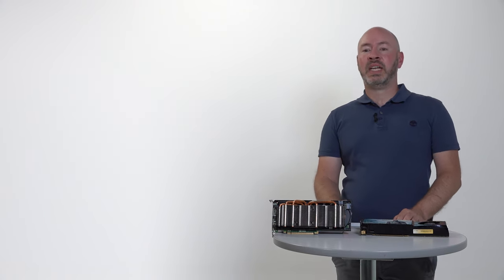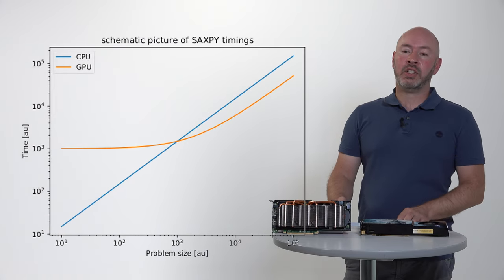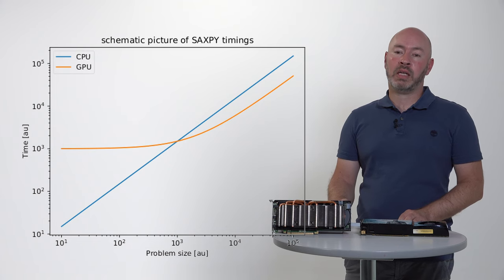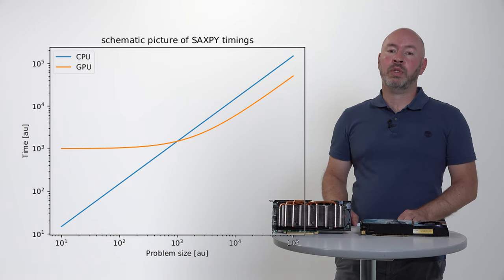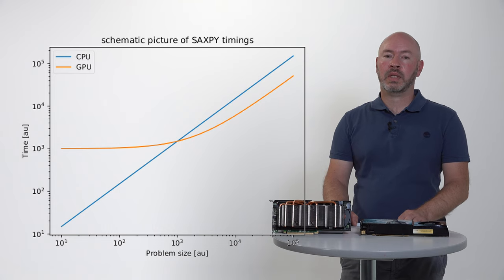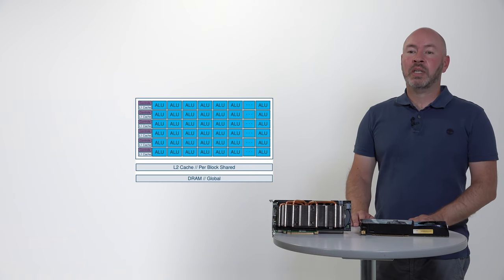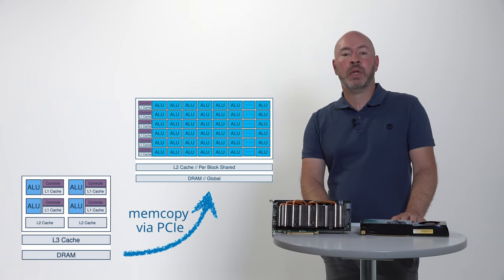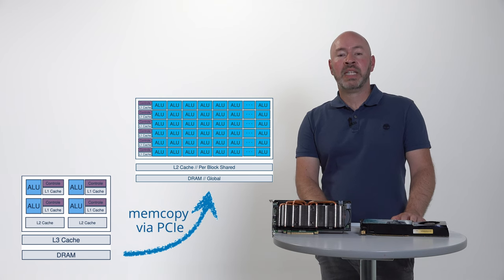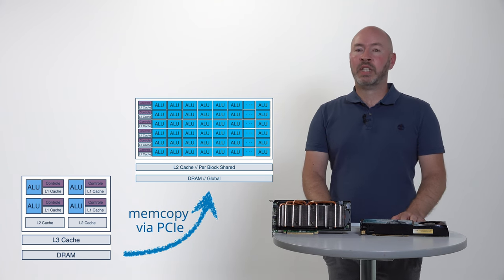What speedup do we expect if we implement a SAXPY kernel for the GPU? Let's look at some timings. Here we have modeled a sequential algorithm on the CPU and a block parallel algorithm on the GPU. Apparently, the GPU only outperforms the CPU for large problem sizes. Why is this? All memory that is processed on the GPU needs to be copied from the CPU memory via the PCI Express bus to the GPU main memory first. Likewise, all results obtained from calculations on the GPU need to be copied back to the CPU.